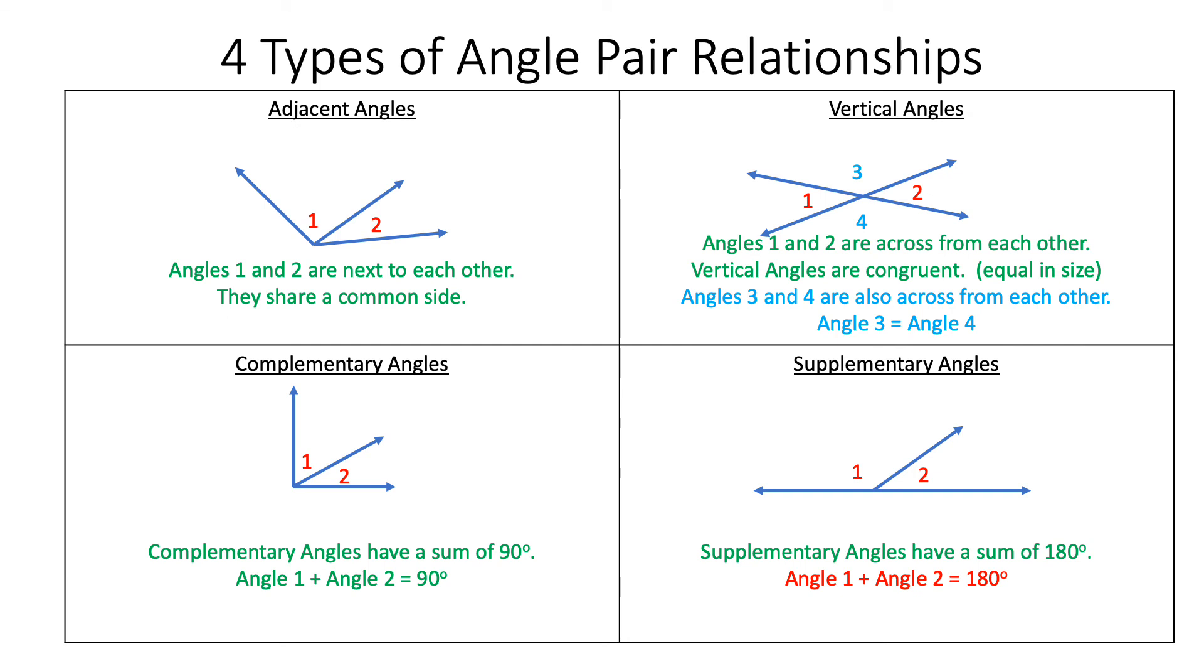Four types of angle pair relationships again are adjacent angles, vertical angles, complementary angles, and supplementary angles. In the next slides you will be answering questions and solving for the value of missing angles. For example, look at supplementary angles. If angle one is 100 degrees, then angle two must be 80 degrees because 100 plus 80 equals 180 degrees.